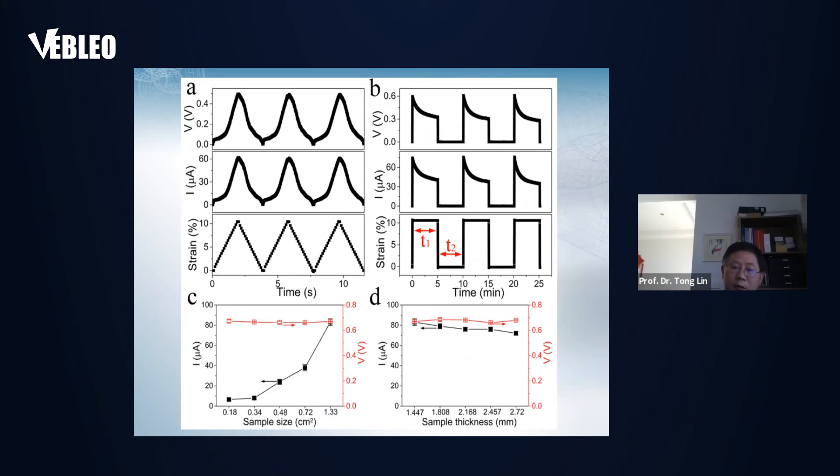If we change the strain model, we found some more interesting things. The left graph shows when the strain increases and then reduces in the same speed and repeated for many cycles, the electrical output changes in a similar trend. The voltage and the current also increase and decrease. However, if we suddenly increase the strain and maintain the strain for a certain period of time, and after that, release the strain until the next cycle, the voltage and the current signal change in different ways.